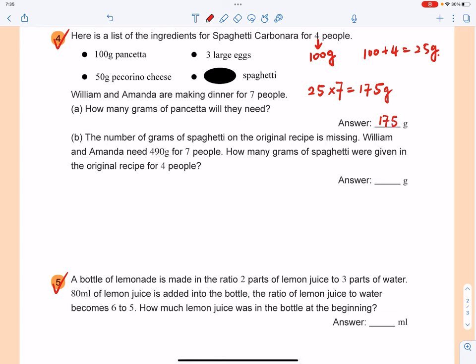Let's see the second question. The number of grams of spaghetti on the original recipe is missing. William and Amanda needs 490 grams for seven people. How many grams of spaghetti were given in the original recipe for four people? So the same thing, right? So 490 for seven, then you need to find how much for each one.